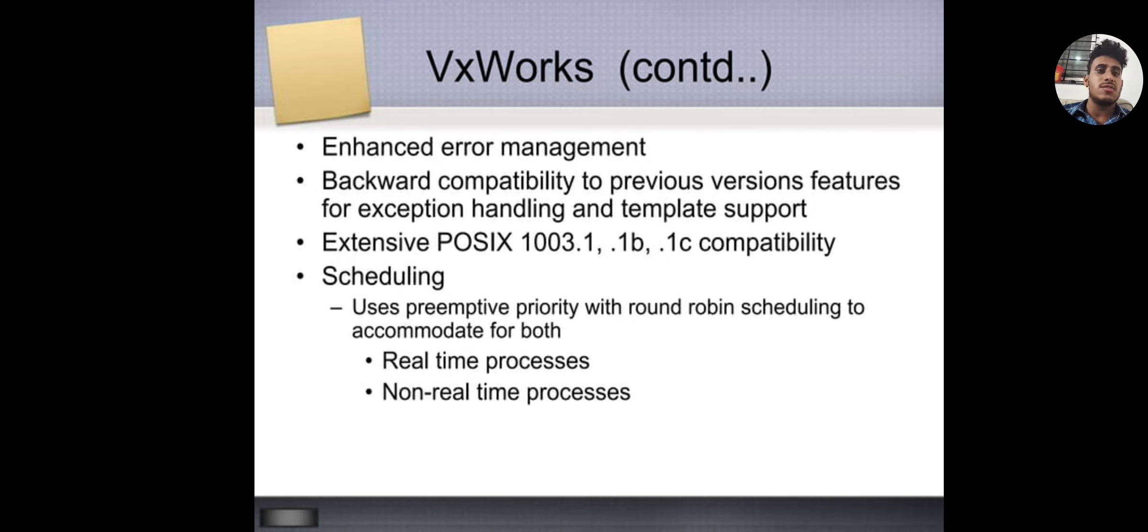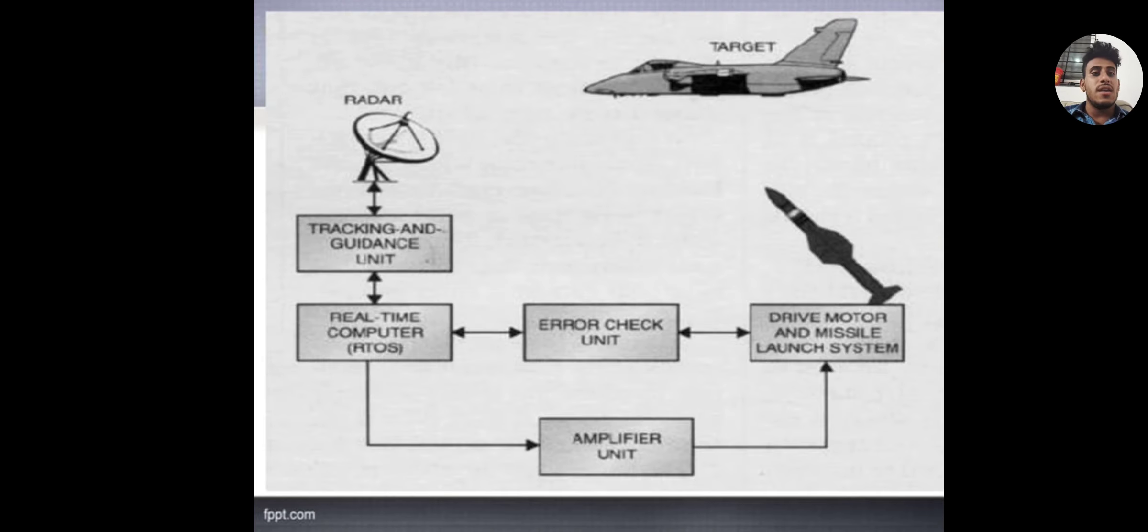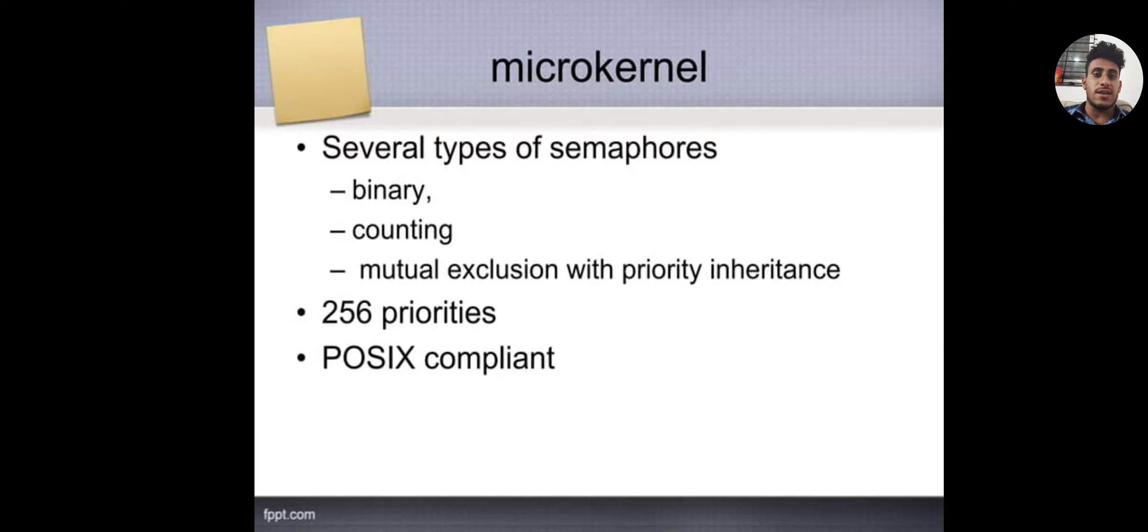Enhanced error management, backward compatibility with previous version features for exception handling and tablet support. Scheduling uses preemptive priority with round-robin scheduling to accommodate both real-time processes and non-real-time processes. Memory protection: MMU-based memory protection reduces the context switch time. It saves only those register windows that are actually in use.